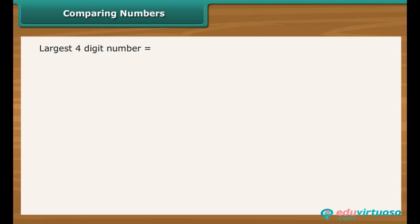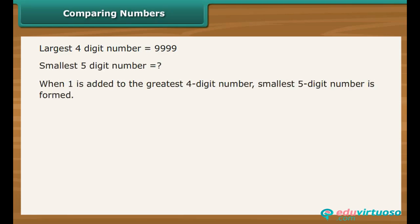The largest four-digit number is 9,999. What should be added to this number to make the smallest five-digit number? The answer is we need to add 1.